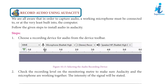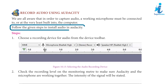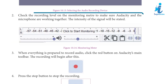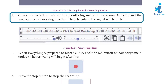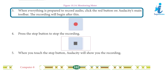Record Audio Using Audacity: We are aware that in order to capture audio, a working microphone must be connected to, or at least built into, the computer. Follow the given steps to record audio in Audacity. Step 1: Choose a recording device for audio from the device toolbar. Step 2: Check the recording level on the monitoring meter to make sure Audacity and the microphone are working together. Step 3: When everything is prepared, click the red button on Audacity's main toolbar to begin recording.